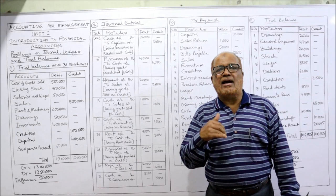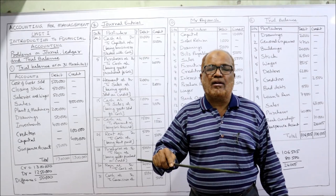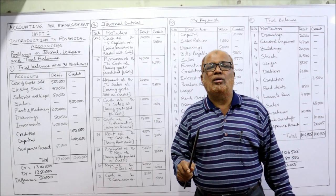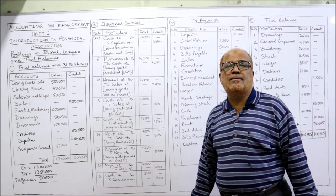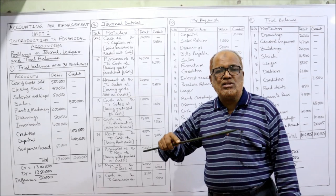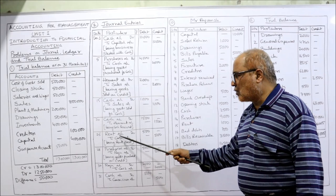Twentieth: received cash from Hemant. Cash is coming in, so cash should be debited. Hemant is the giver — debit the receiver, credit the giver. Entry: Cash account Dr. to Hemant account 1,500. Narration: being cash received. Twenty-fifth: paid for rent. Cash is going out, so cash should be credited. Rent is the expense. Entry: Rent account Dr. to Cash — narration: being rent paid.